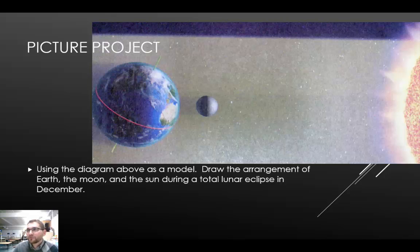Using the diagram that we see here as a model, I want you to draw the arrangement of Earth, the moon, and the sun during a total lunar eclipse in December. Draw the arrangement of Earth, the moon, and the sun during a total lunar eclipse in December. Use the picture as a model.